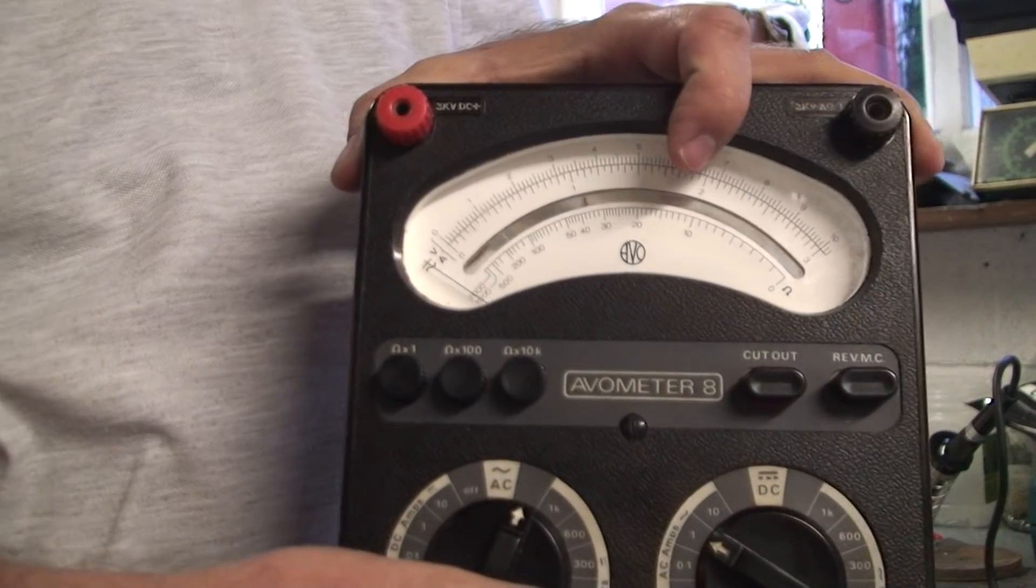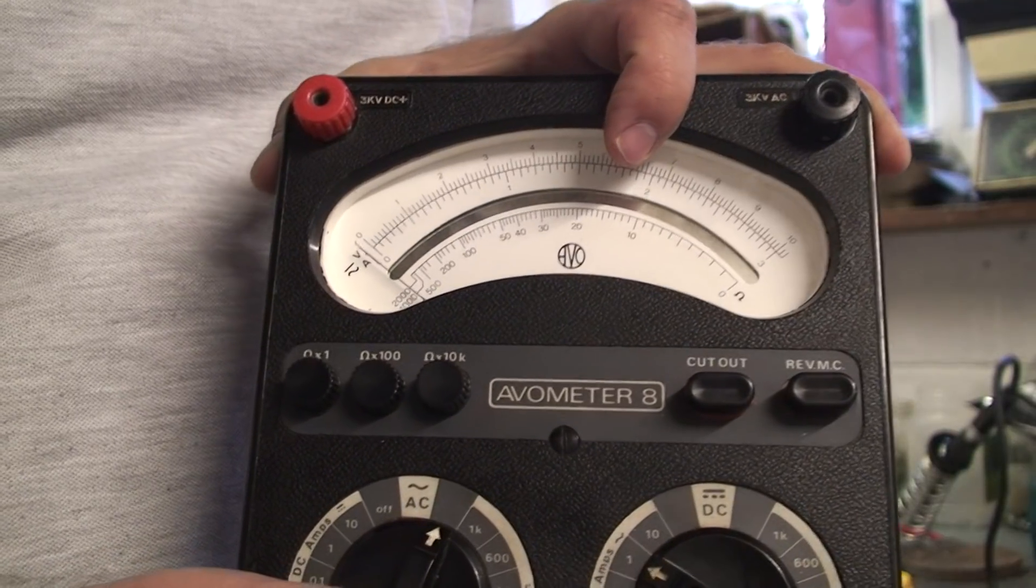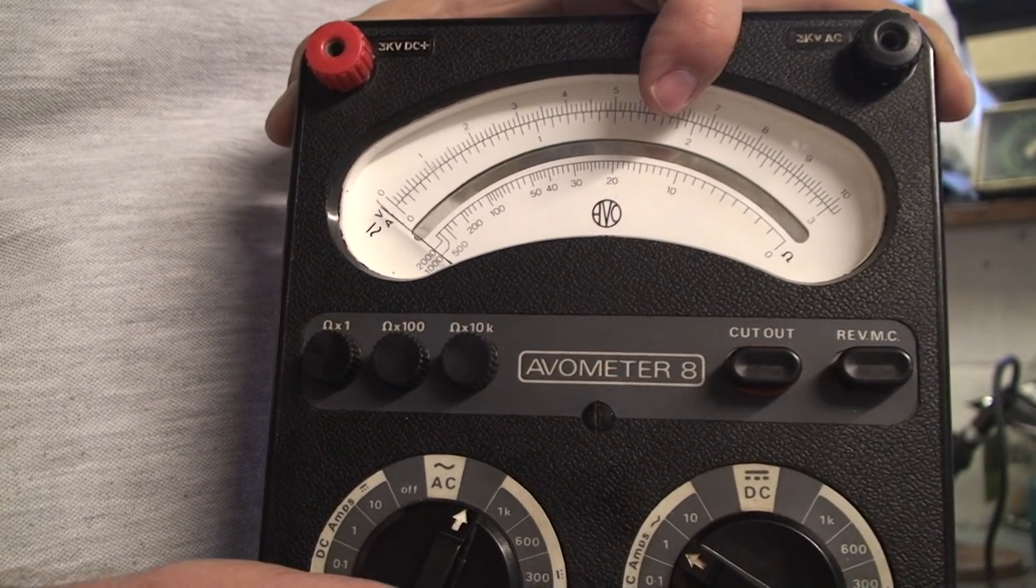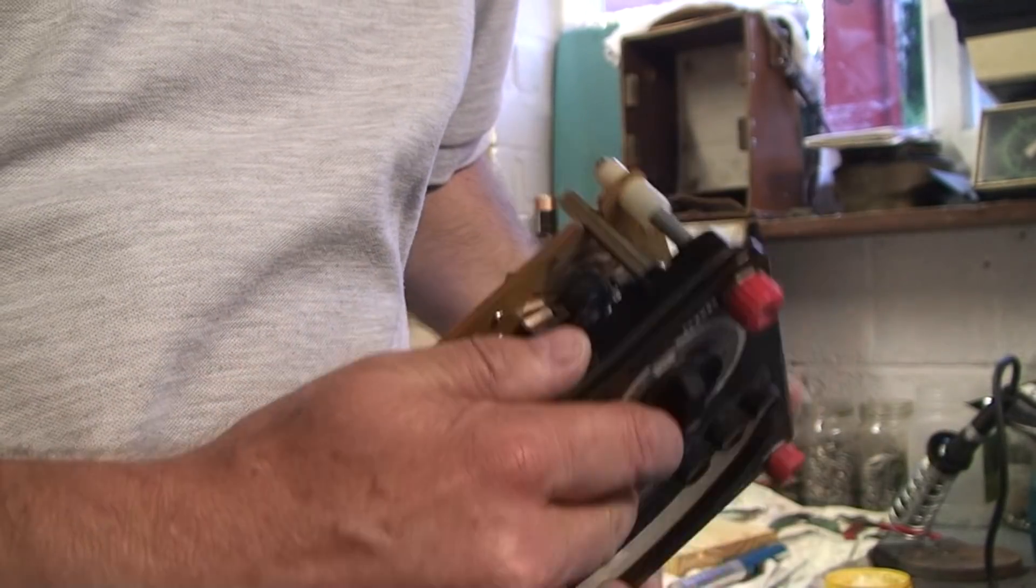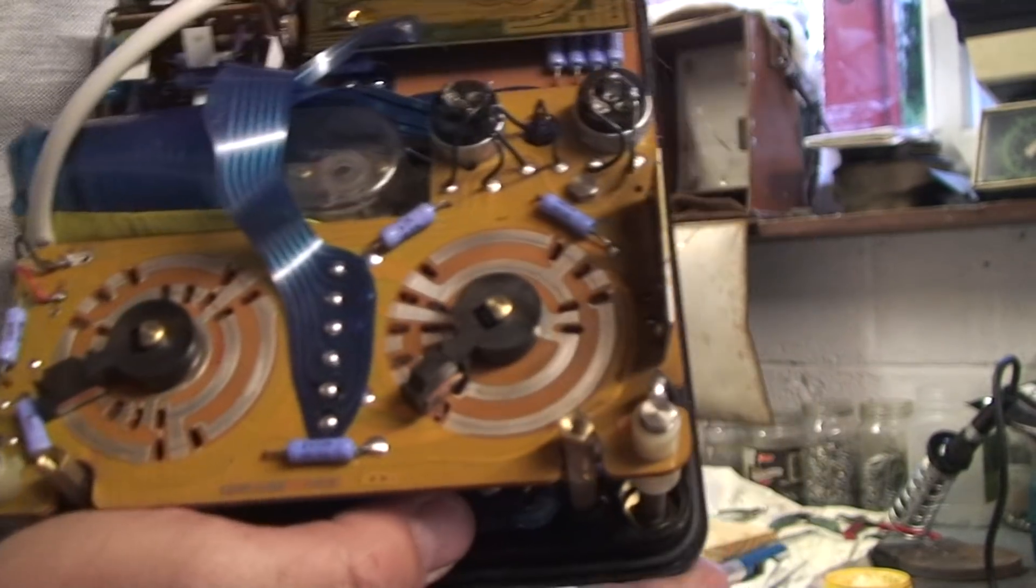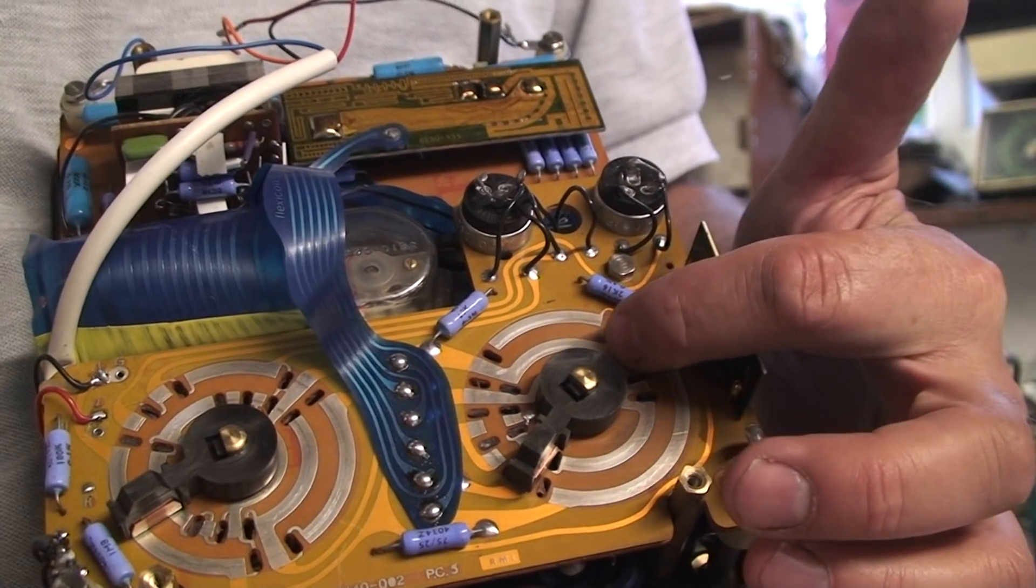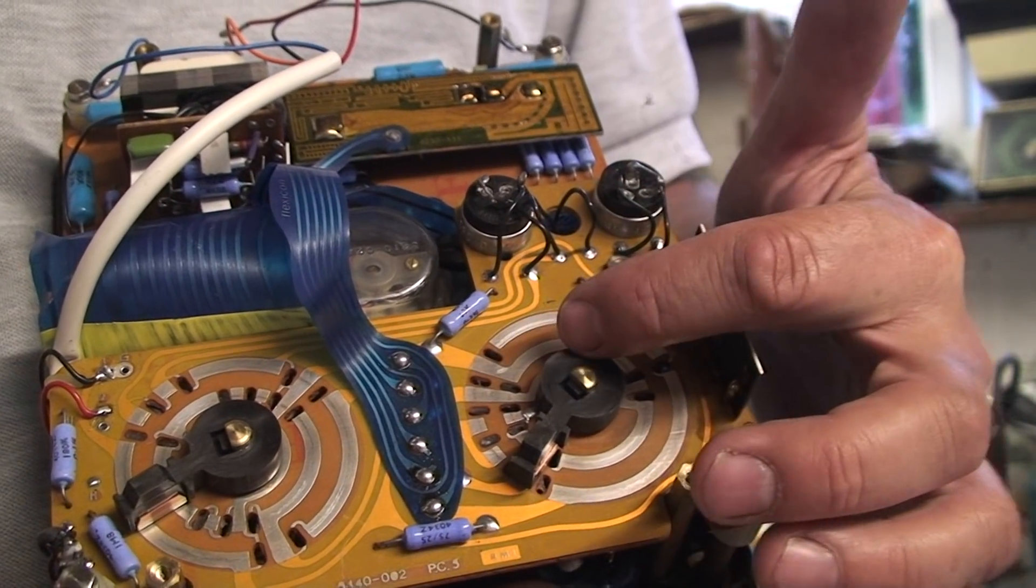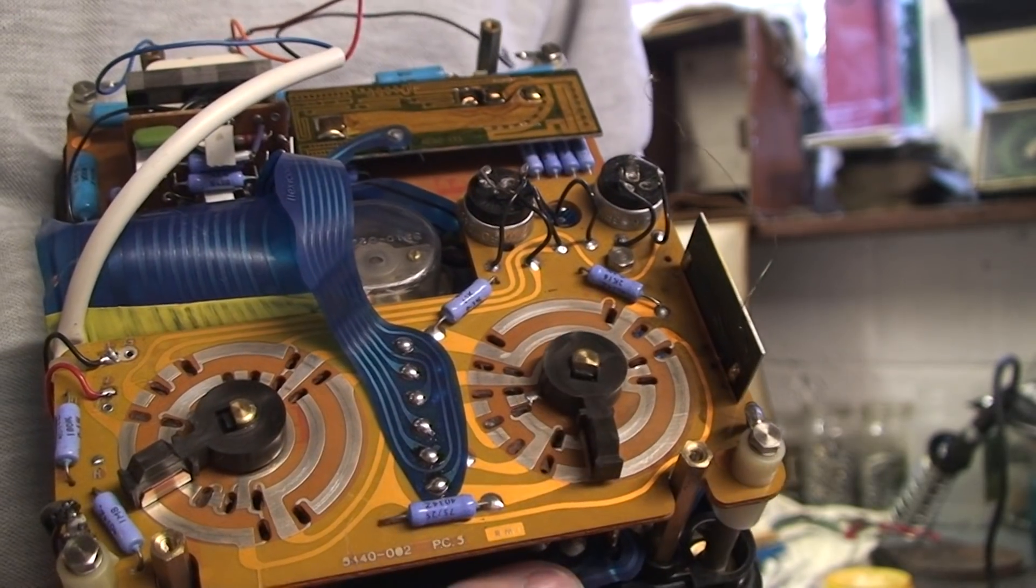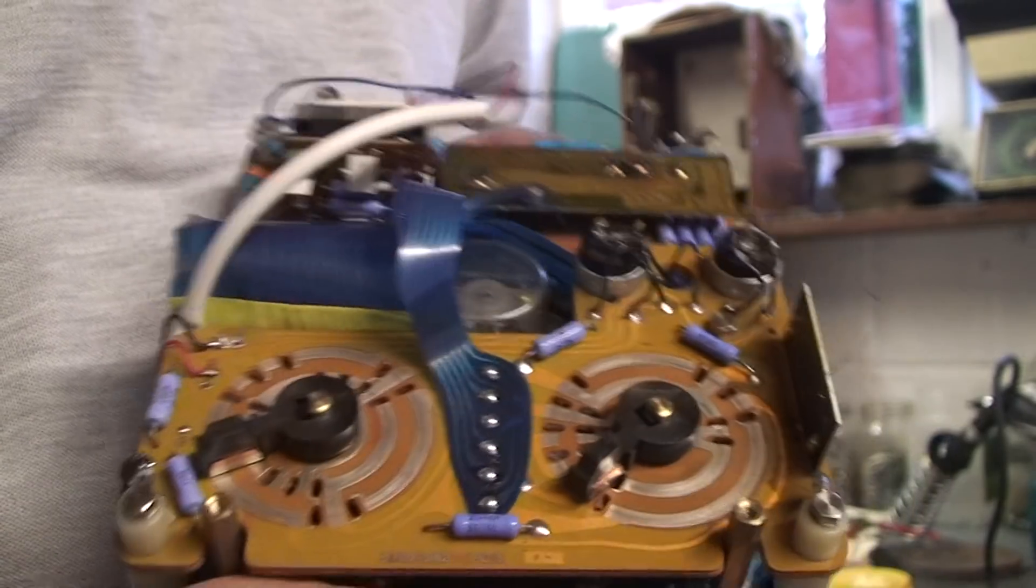There's the AVO and it's quite beautiful. I've cleaned it up and it looks like brand new now, excellent. I used contact cleaner here on this, so the track on the switches is perfect.